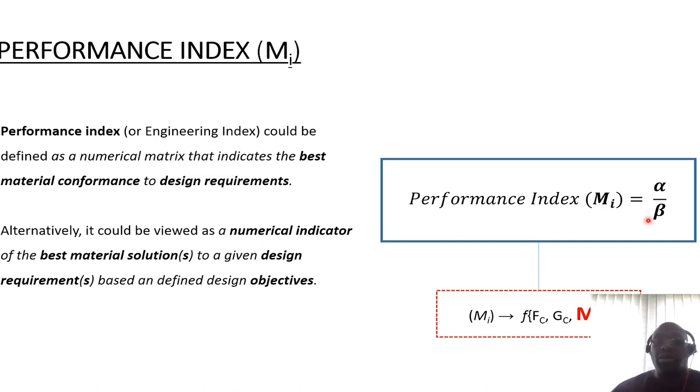When it comes to looking at the performance index, it's a function of three things: functional constraints, which look at loading and parameters; geometric constraints, which look at sizing in terms of length, width, and depth; and the key element here when it comes to CES is the material constraint. It becomes important to have a good understanding of what are the desired characteristics that you see in the material for a given design.